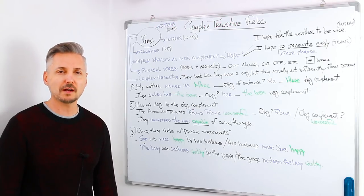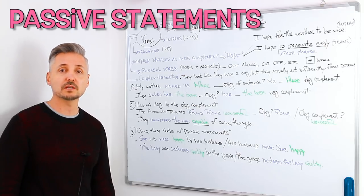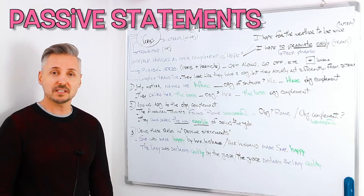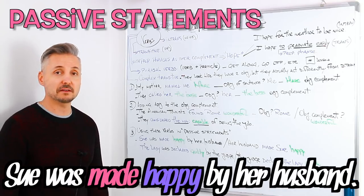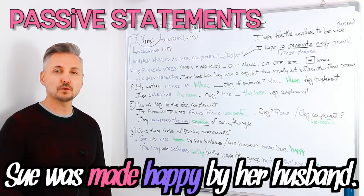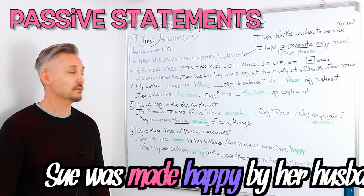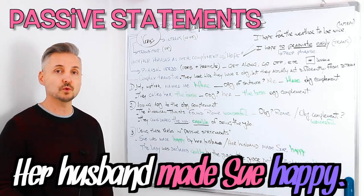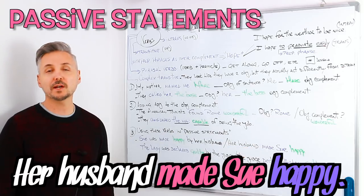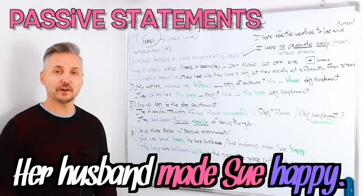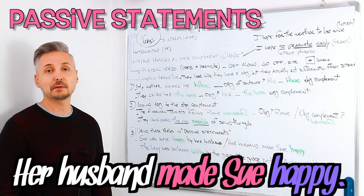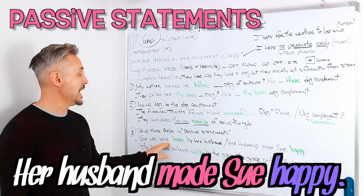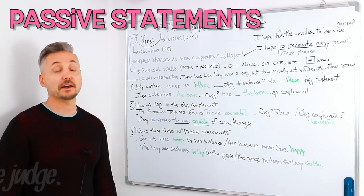The third point is that these verbs can also be used in passive statements, just like my examples. Sue was made happy by her husband — this is a passive statement. If you wanted to make that sentence active, we would say: her husband made Sue happy. So what is the object? Sue. What is the object complement? Happy. Sue is the object and happy is the object complement. Sue was made happy by her husband. Let's look at another example.